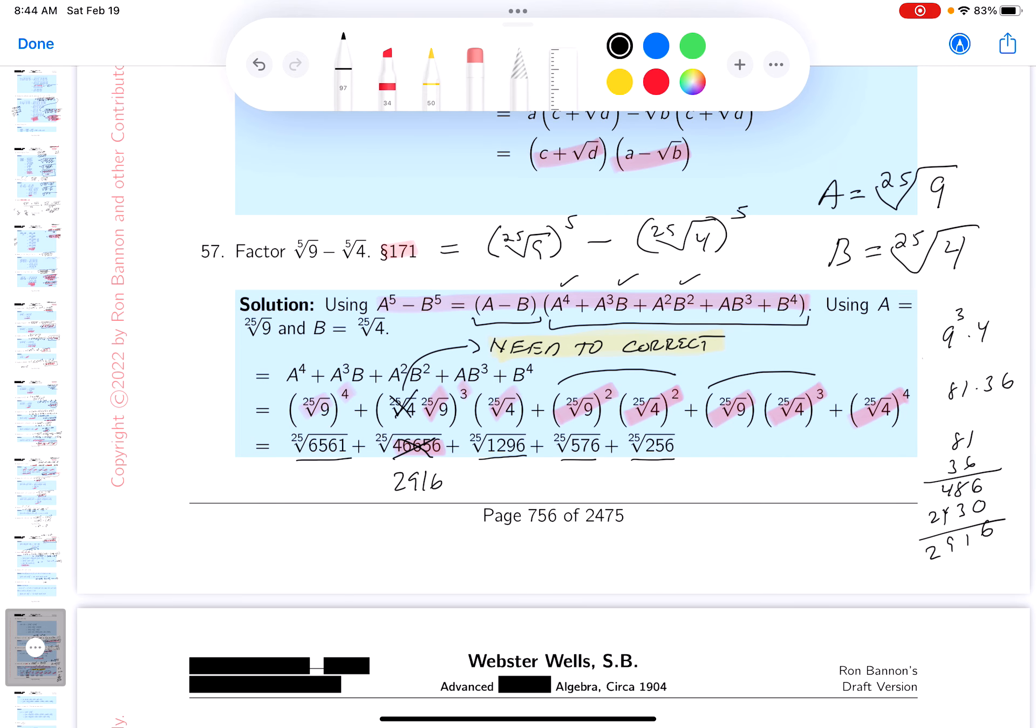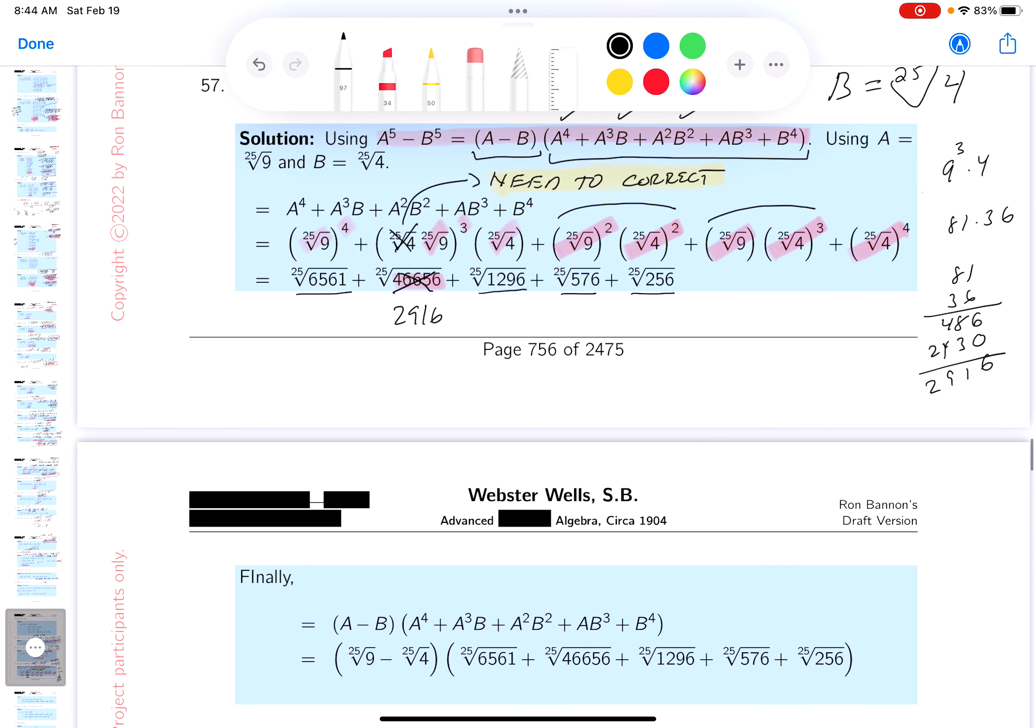Now, with all that arithmetic, you may be at the stage saying, I don't even know why I did all that. The reason you did that was to write down the factorization. So the factorization is going to be a minus b. We know what a minus b is—this is a and this is b. So a minus b would be the 25th root of 9 minus the 25th root of 4. Then I'm going to write down what I get over here. There's an error, but I'm going to cross this off, and this should be 2916. I need to correct.